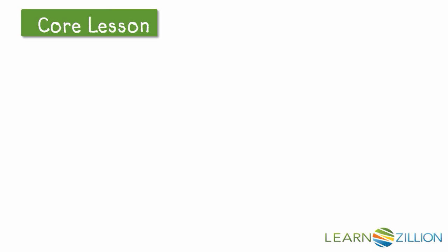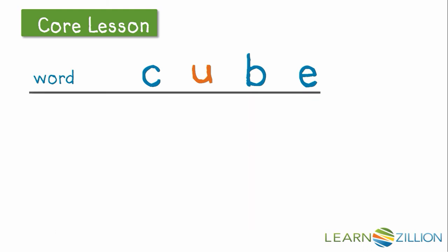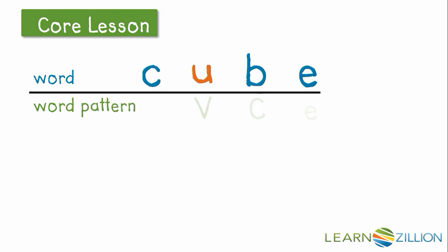Let's try these steps with the word on this page: c-u-b-e. I want to see if the word follows the vowel consonant e word pattern. So I'm going to look at the last three letters of the word. I see that u is a vowel. I see that there is a b — b is not a vowel, it is a consonant. And I see that there is an e at the end of the word. Yes, this word follows the vowel consonant e word pattern.